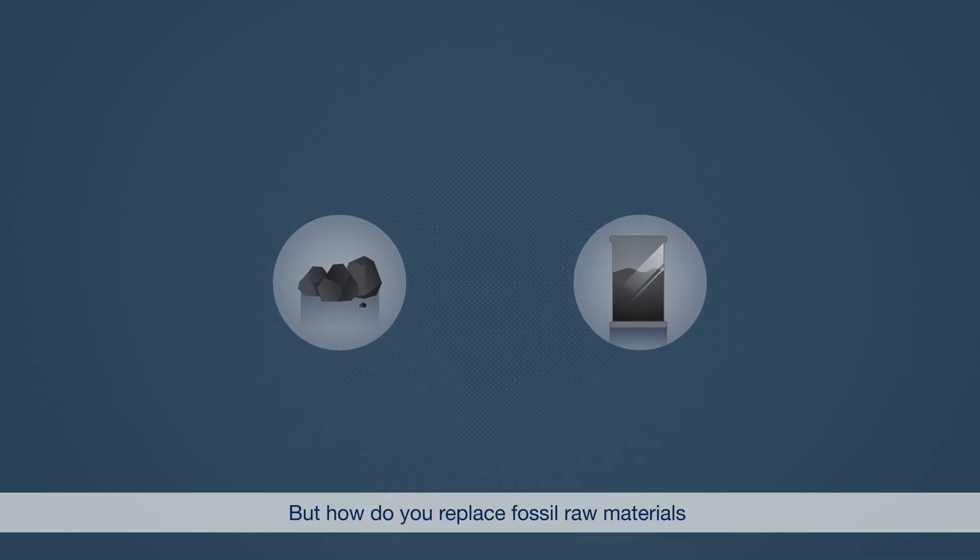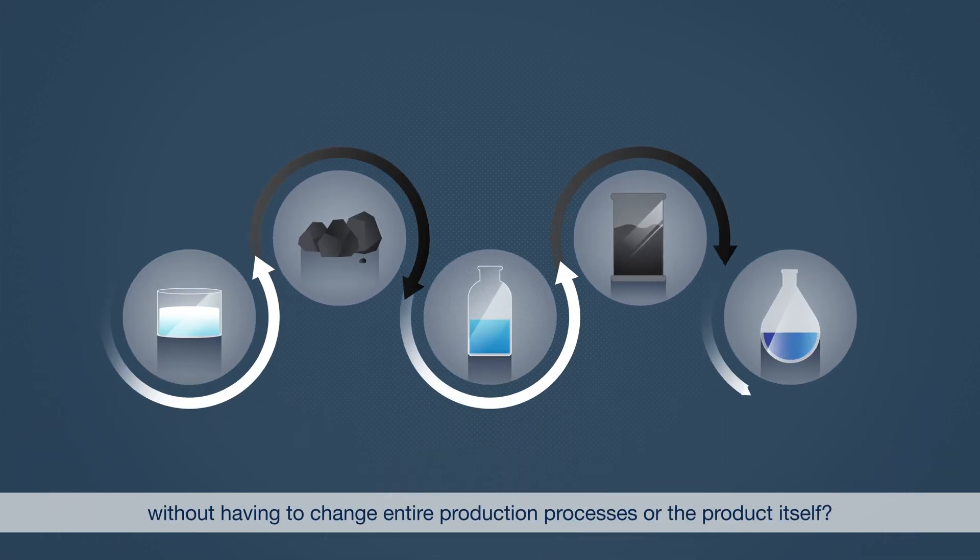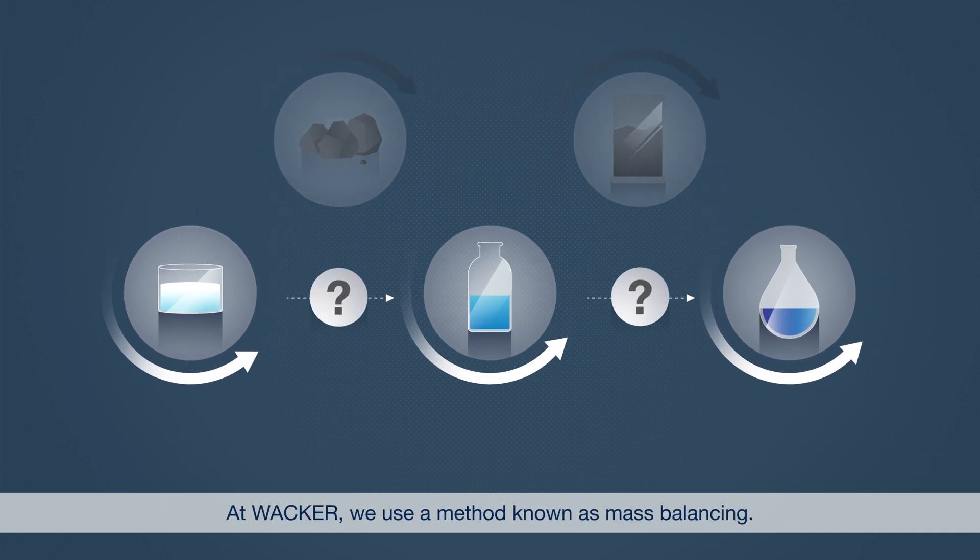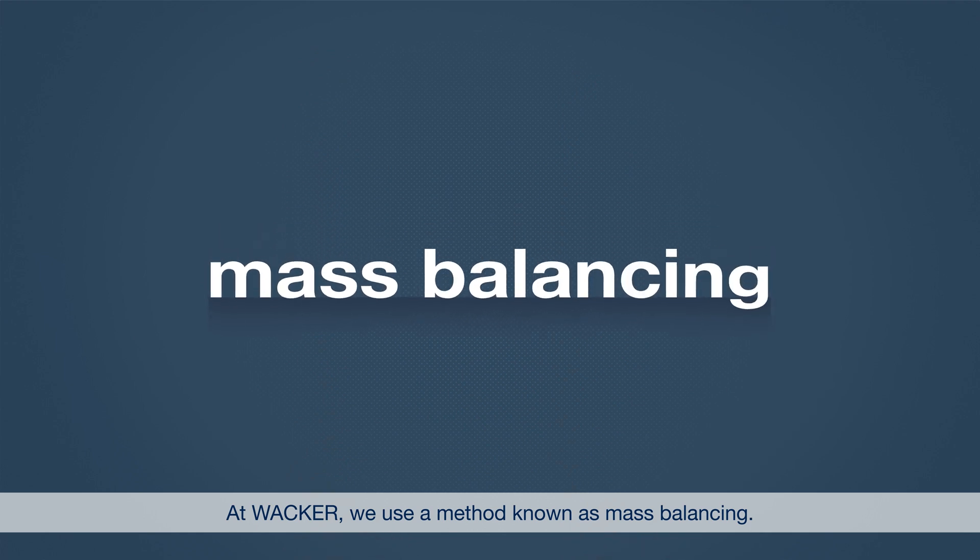But how do you replace fossil raw materials without having to change entire production processes or the product itself? At WACKER, we use a method known as mass balancing.